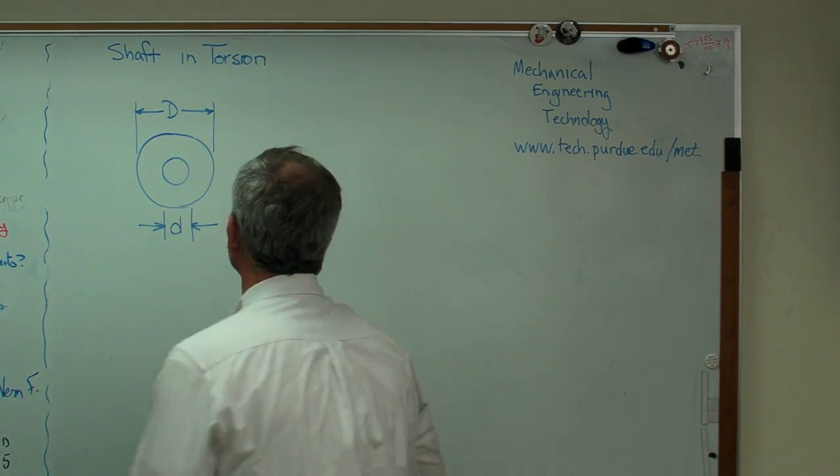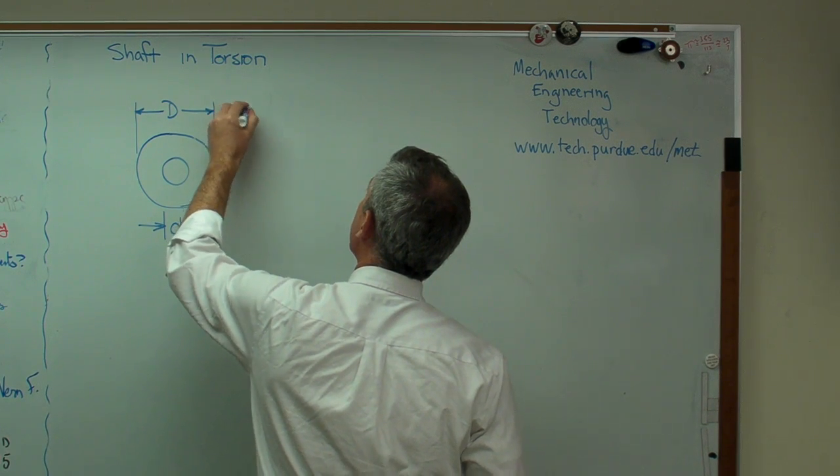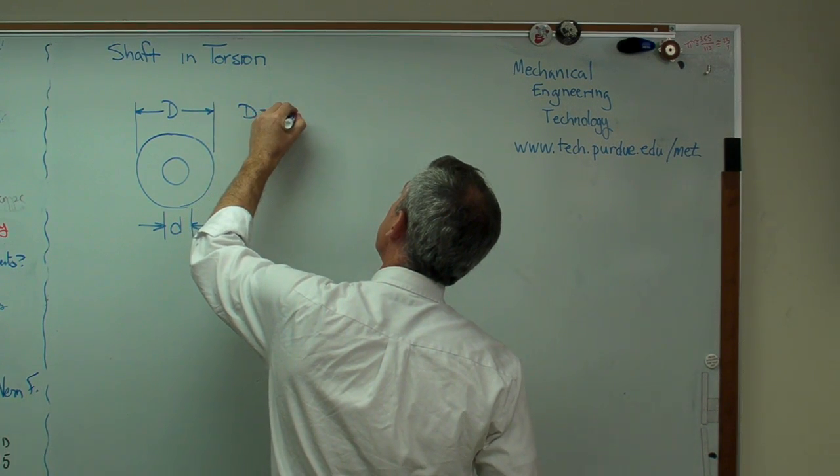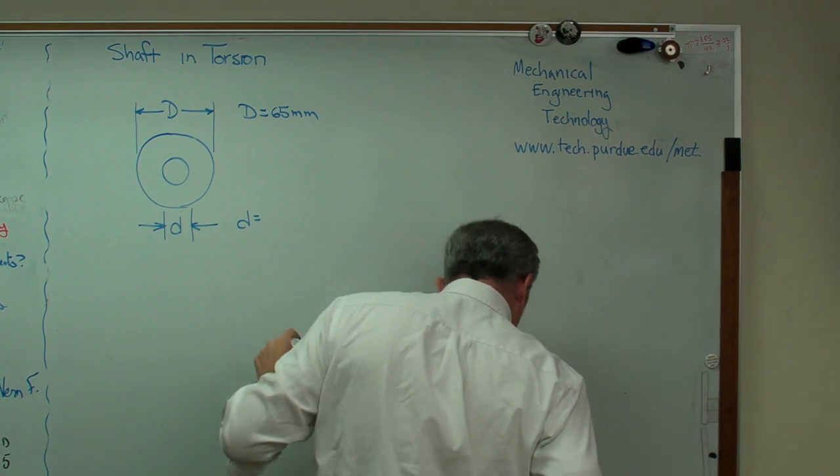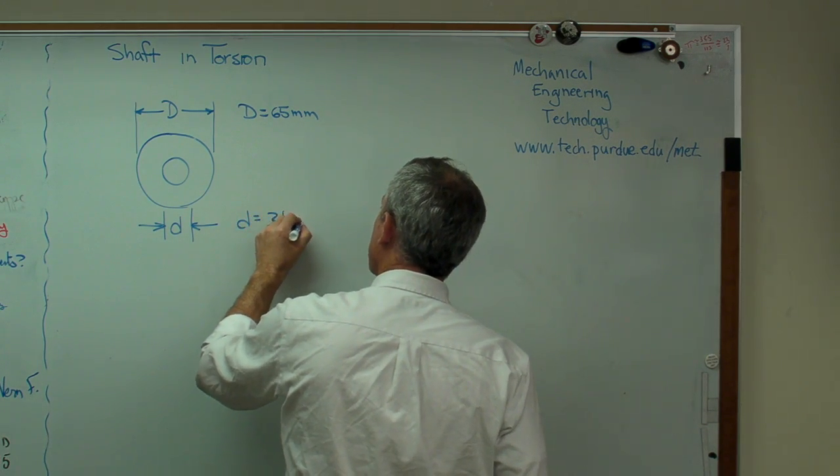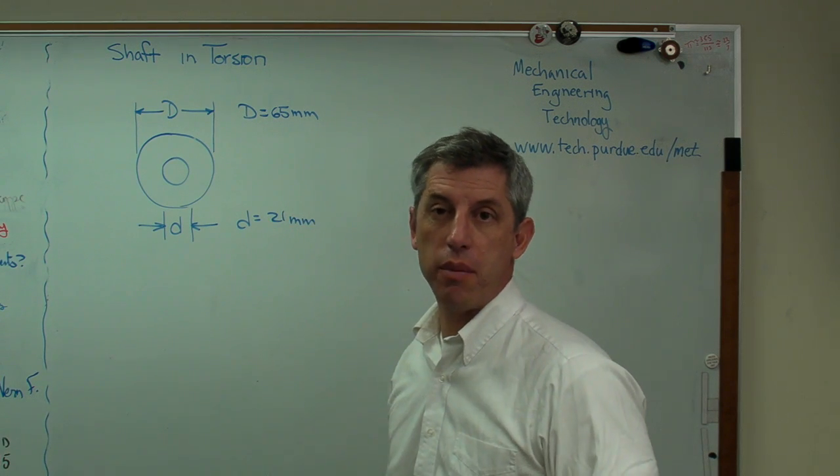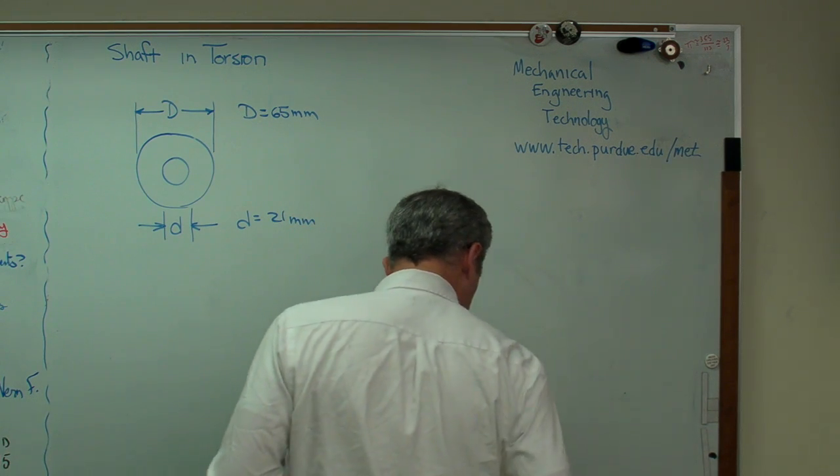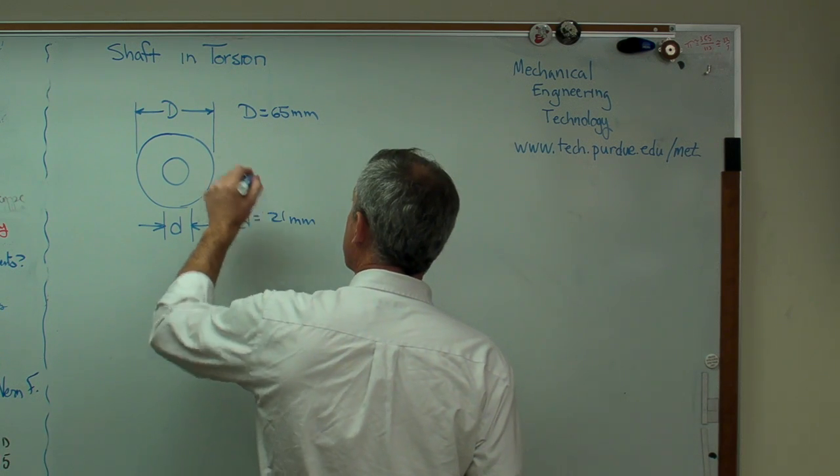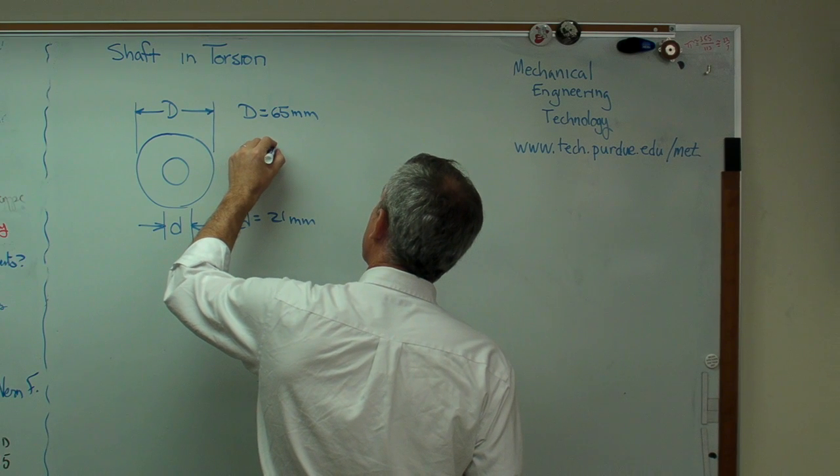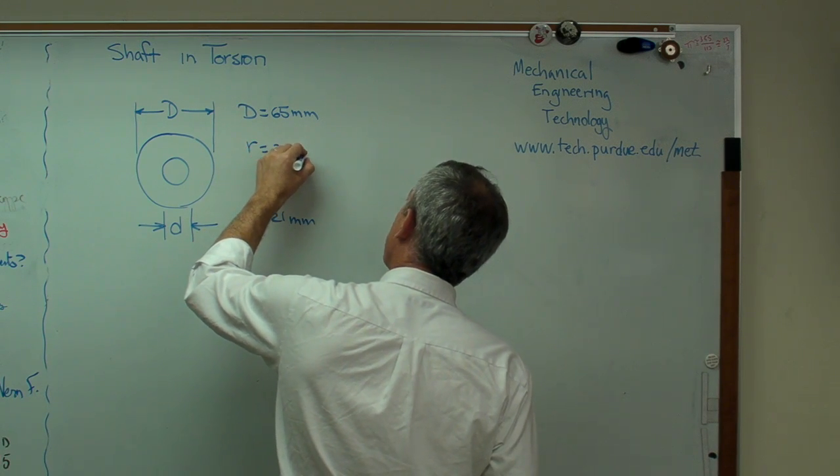So let's take an example here. Let's take an outer diameter of 65 millimeters, an inner diameter of 21 millimeters. And I picked these numbers because those are basically what I measured off that blue swimming noodle. And so that means that the radius, the largest radius, is 32.5 millimeters.